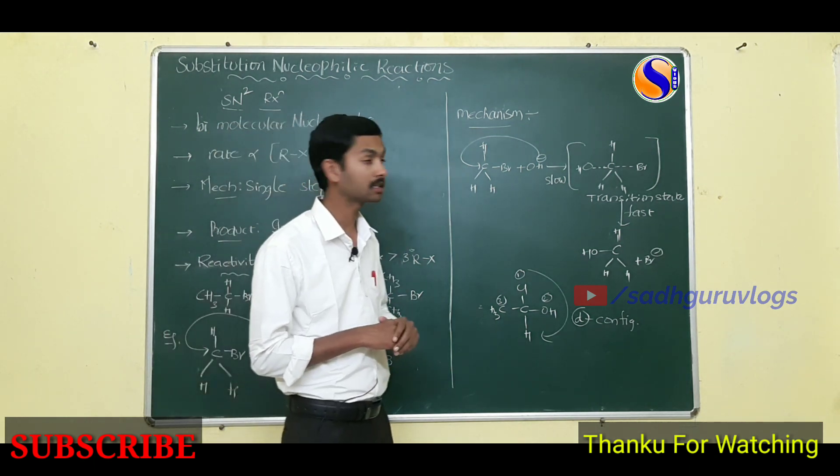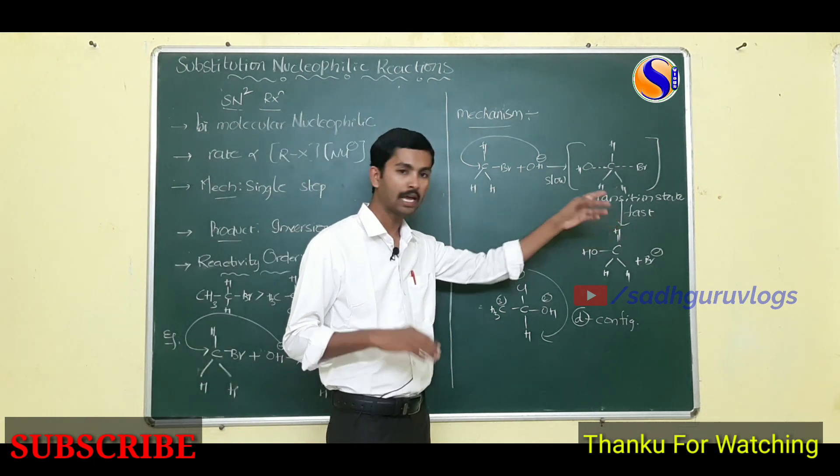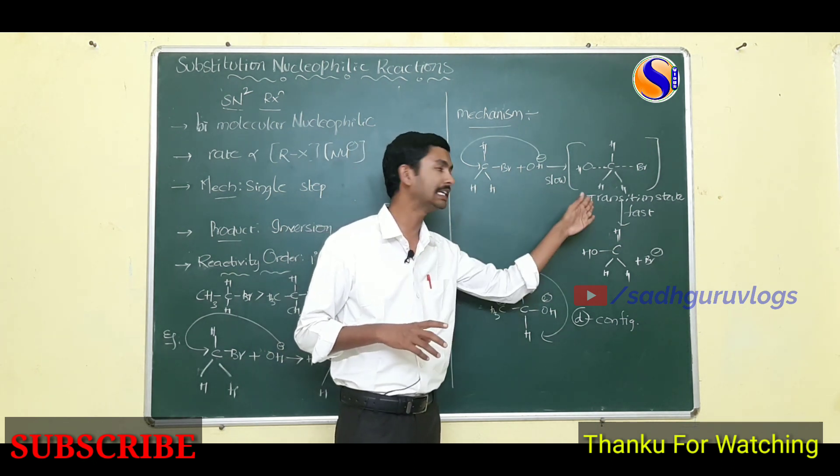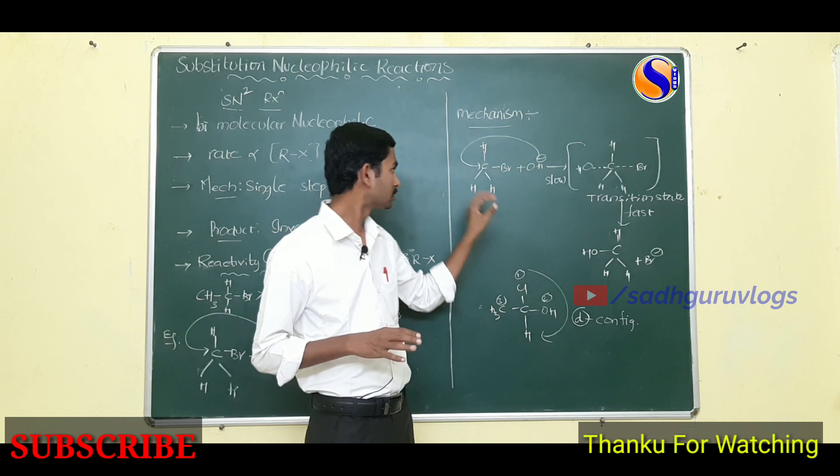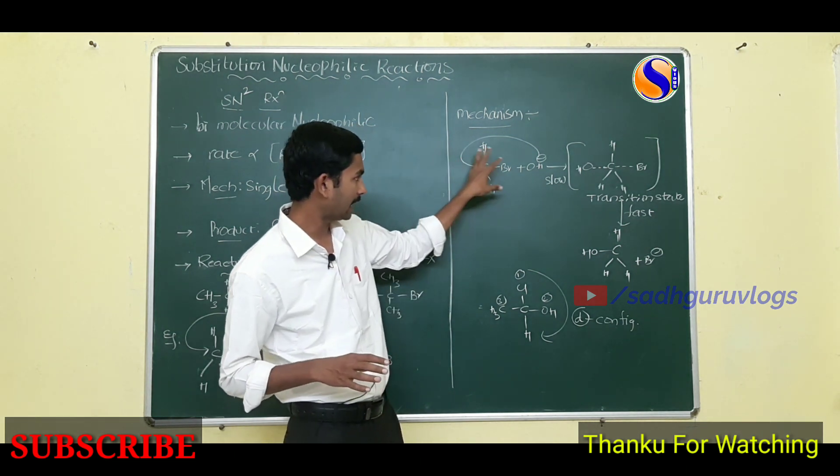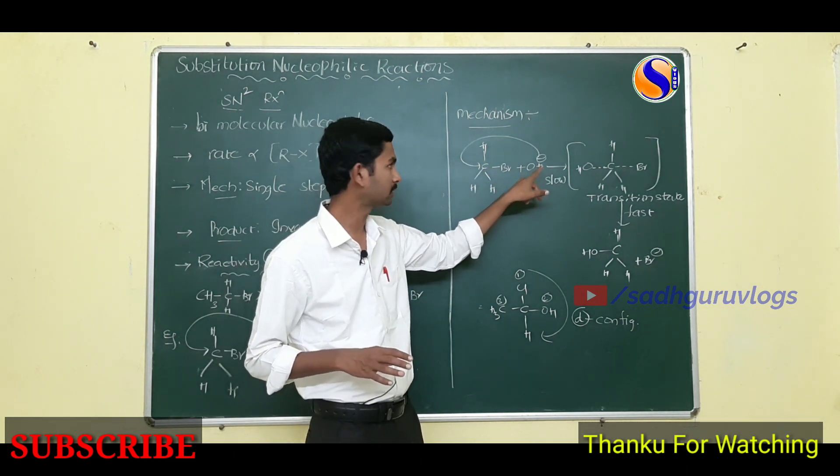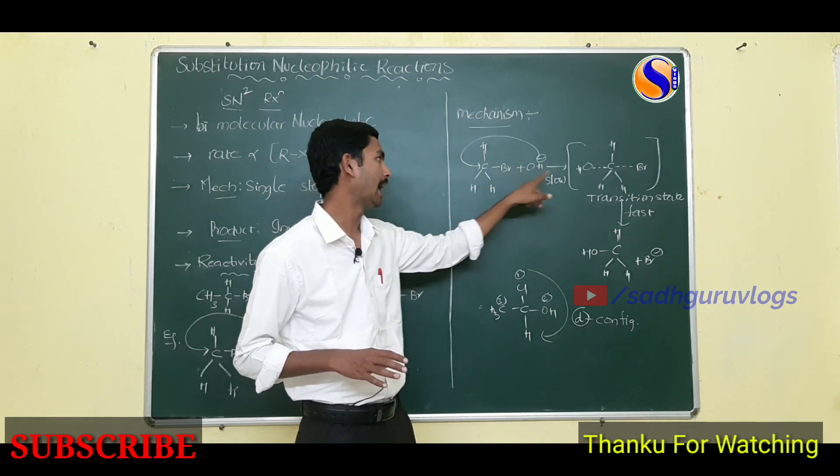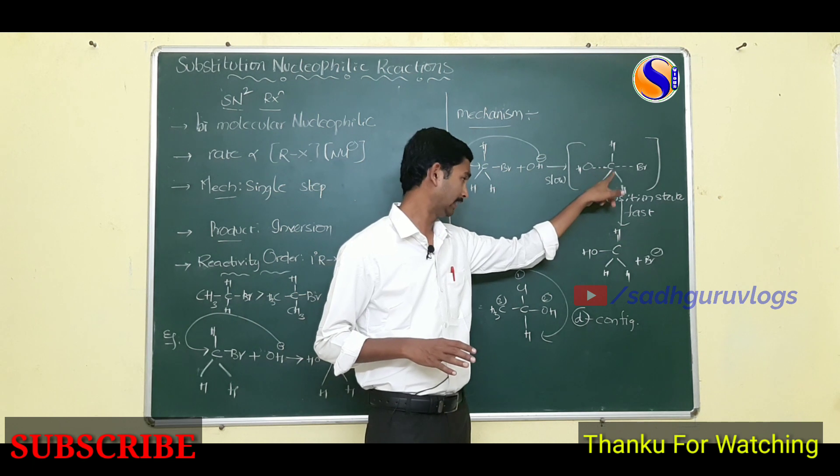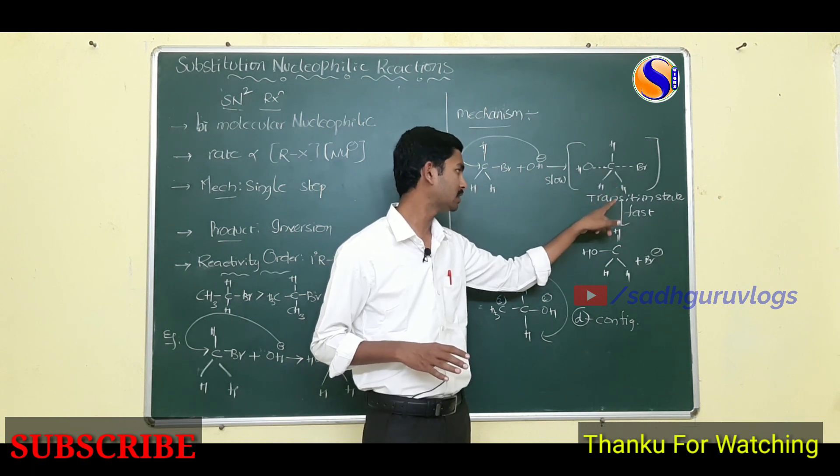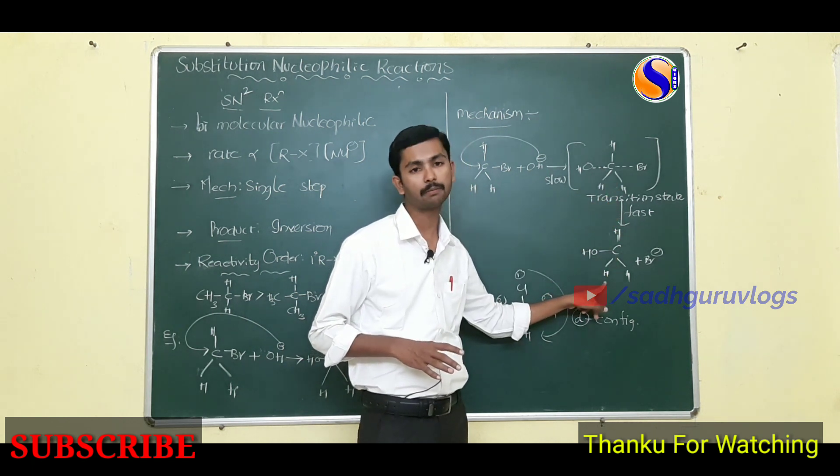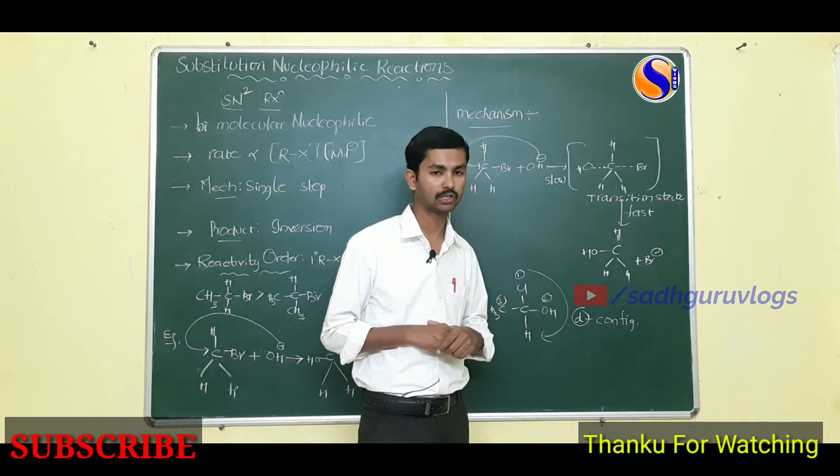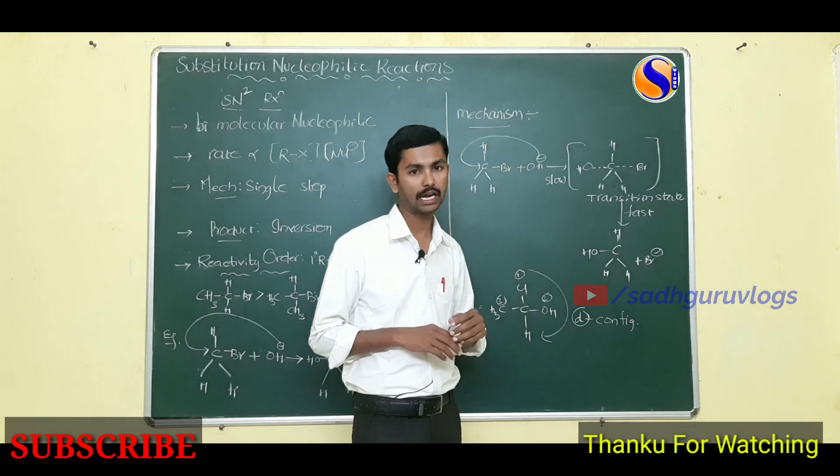If you observe the mechanism, it is a single step mechanism. In this, you observe the transition state. What is transition state? It is intermediate, not stable. When methyl bromide reacts with base hydroxyl group, that negative charge attacks from the opposite side of the halogen and forms the transition state in which we are observing the inversion product called Walden inversion. This is about SN2 reaction.